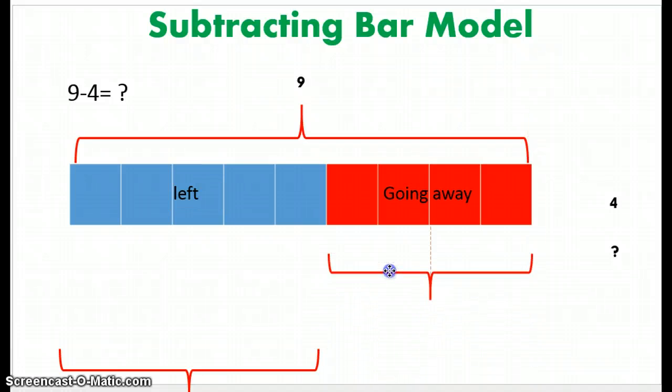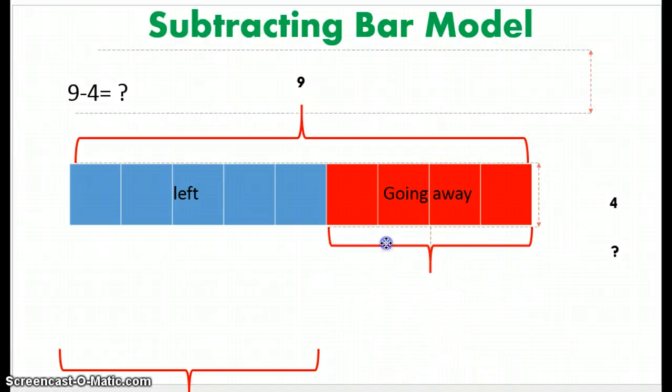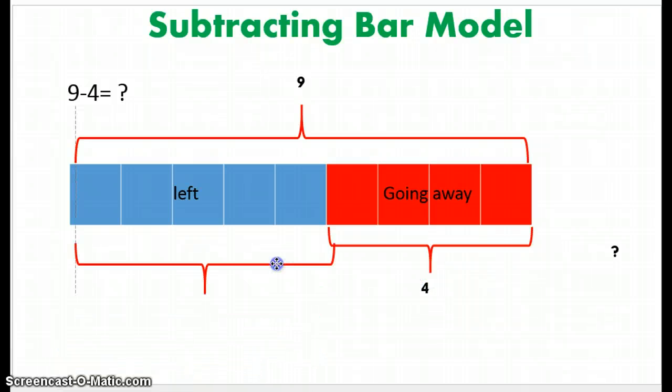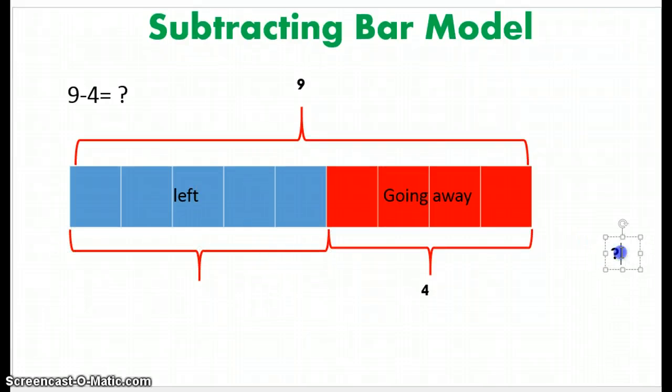So I'm going to continue labeling everything with brackets and numbers, going away. What's going away? Okay, 4 is going away. And this blue part is left. And since we don't know the answer yet, we're going to label that question mark. I don't know.